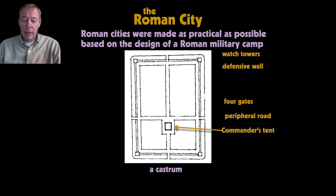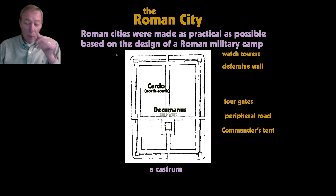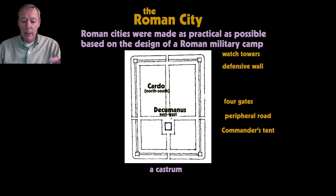There was a peripheral road between the defensive wall and the encampment area, and the commander's tent was located at the intersection of the two main roads in the middle. The north-south road was called the cardo, and the east-west road was called the decumanus, coming in from the four main gates. Where those intersected was the location of the commander's tent, and the legionaries' tents were distributed in the other four quarters.